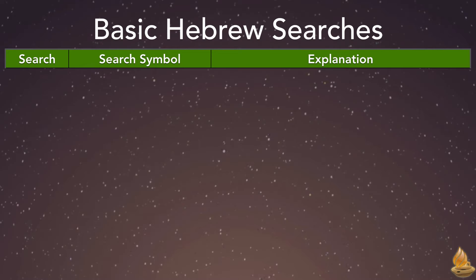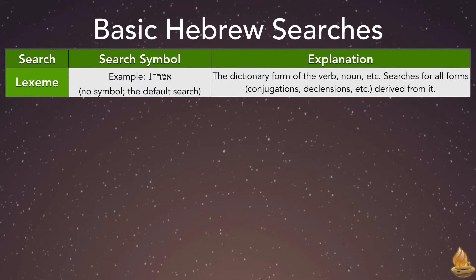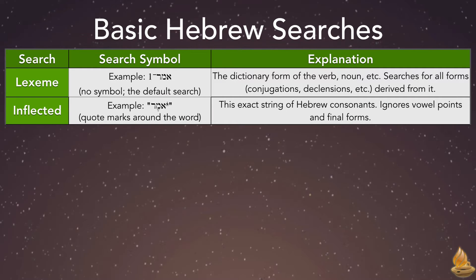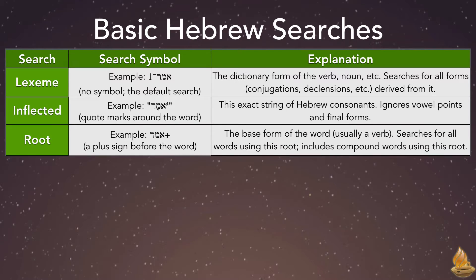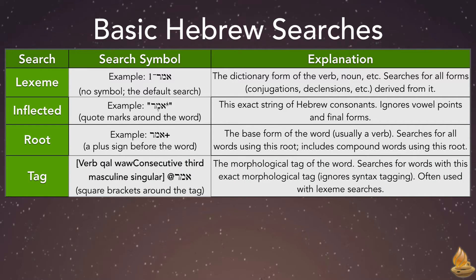The lexeme search has no symbol since it's the default search. It looks for the dictionary form of the verb or noun and searches for all forms — all conjugations and all declensions derived from it. The inflected search places quote marks around the word. It looks for this exact string of Hebrew consonants and ignores vowel points and final forms. The root search uses a plus sign to indicate it. It looks for the base form of a word, usually a verb, and searches for all words using this root, including compound words. The tag search uses square brackets around the morphological information, and it searches for the morphological tag of the word, ignoring syntax tagging. It's often used with lexeme searches, where the format is the lexeme followed by the at sign. The at sign joins the various search criteria, so they must apply to the same word.